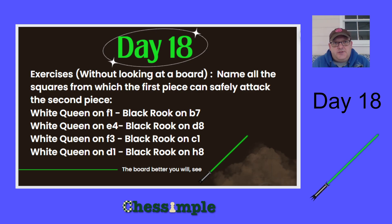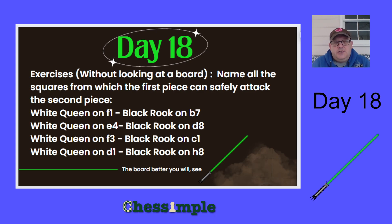The second exercise is to name all the squares from which a white queen on e4 can safely attack a black rook on d8. The third one is name all the squares from which a queen on f3 can safely attack a rook on c1. And finally, all the squares from which a white queen on d1 could safely attack a black rook on h8. Go ahead and pause this video — I'll let it run for a few seconds and then we'll start looking at the answers.